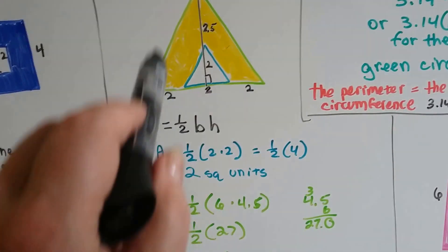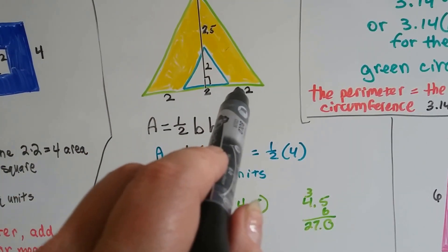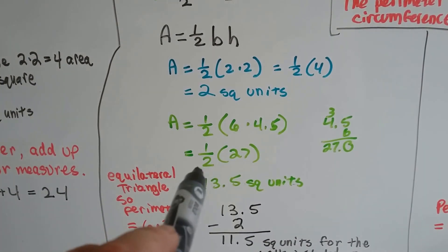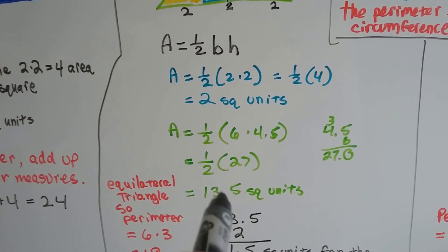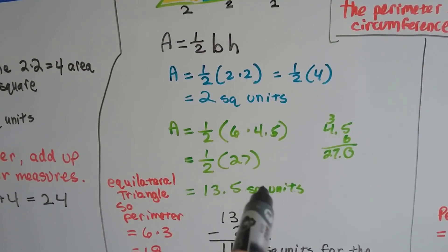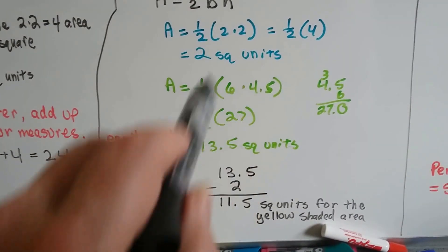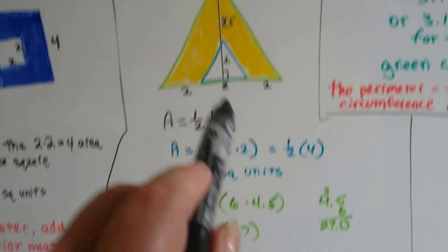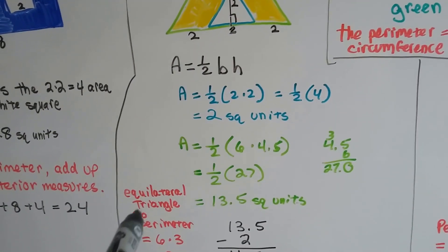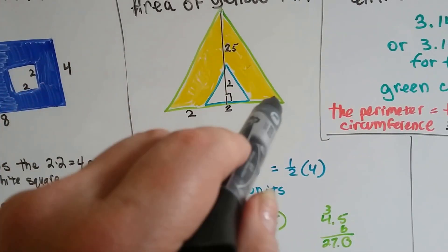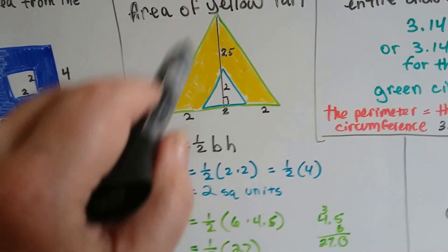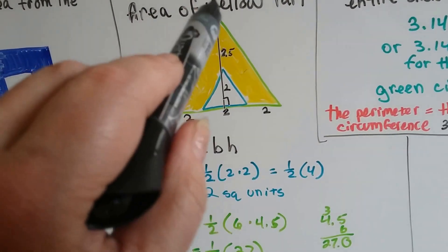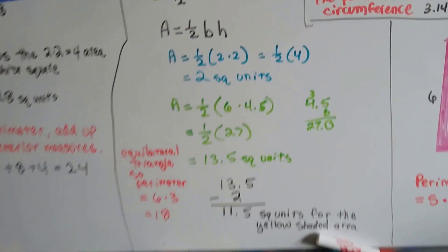Then, we find the area of the entire thing. 2 and 2 and 2 is 6, so we know the base is 6, and we know the height is 4.5. We do our math, and we get an area of 13.5 square units. We take the 2 square units from the 13.5 square units, and we know the yellow shaded area is 11.5 units. To find the perimeter for it, we just add up the exterior. And, if it were an equilateral triangle, it would be 6 and 6 and 6. It would be 18.